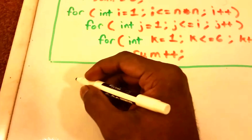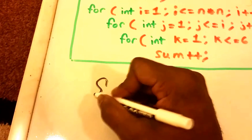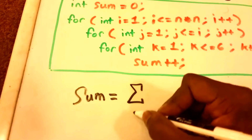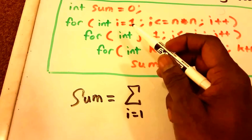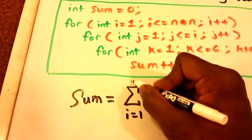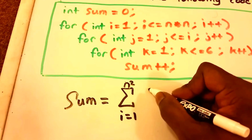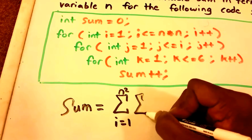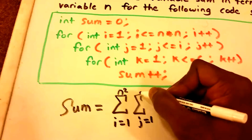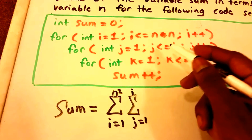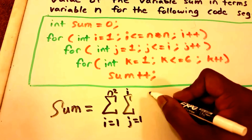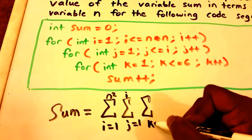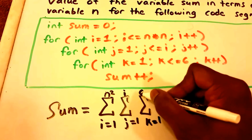So let's rewrite the for loops as a summation to solve for sum. Sum is going to equal the summation from i equals 1 — that's our first for loop — up to n times n, which is just n squared. Within that, we have our second for loop, so we run from j equals 1 all the way to i. Then within that second for loop we have a third for loop, so we have a third summation running from k equals 1 to 6 of 1.